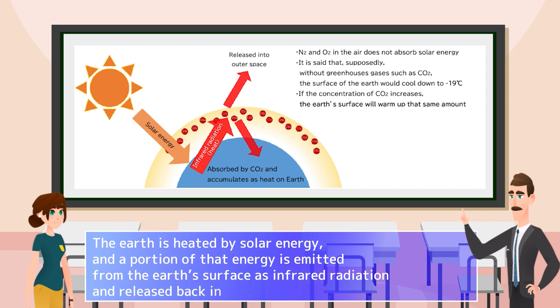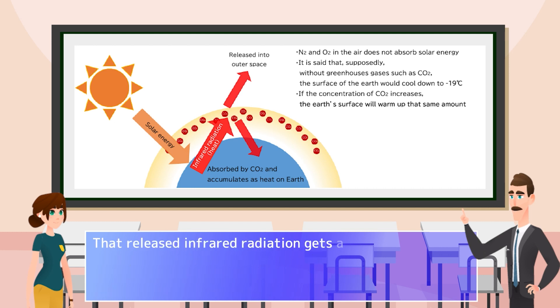The Earth is heated by solar energy, and a portion of that energy is emitted from the Earth's surface as infrared radiation and released back into outer space. That released infrared radiation gets absorbed by greenhouse gases such as CO2 and returns to the ground as heat.